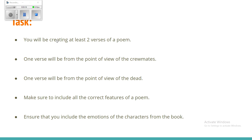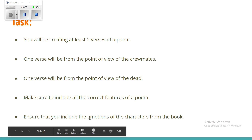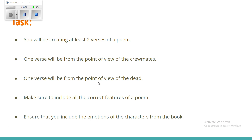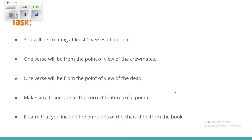Your task for today is to create at least two verses of a poem. At least one verse will be from the point of view of the crewmates, and at least one more will be from the point of view of the dead. Make sure you include all the correct features of a poem — rhyming, punctuation, capital letters, the correct verse length — and ensure you include the emotions and characters from the book, all these thoughts and emotions and ideas we've been through. Include them in your verses.